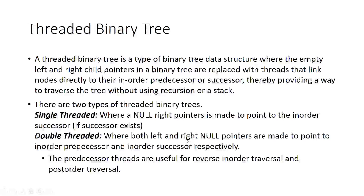There are two types of threaded binary trees: single threaded binary tree and double threaded binary tree. In the case of single threaded binary tree, only right threads exist. If there is no right child, the right thread exists — that is, only the thread pointing to the in-order successor exists. It will not worry about the predecessor.